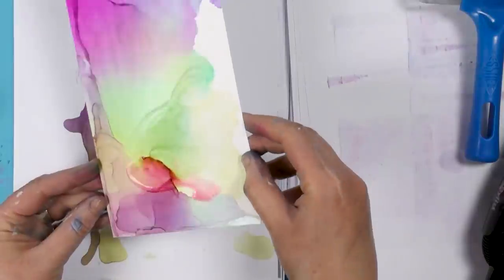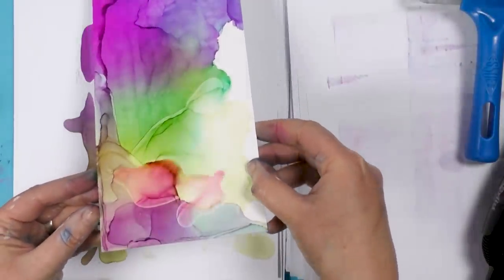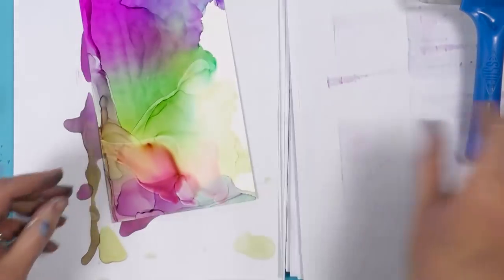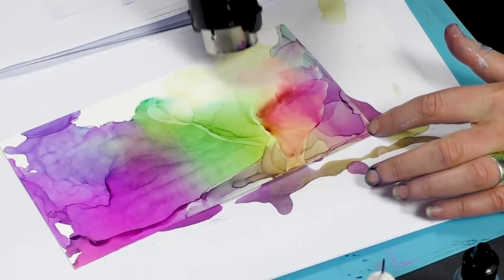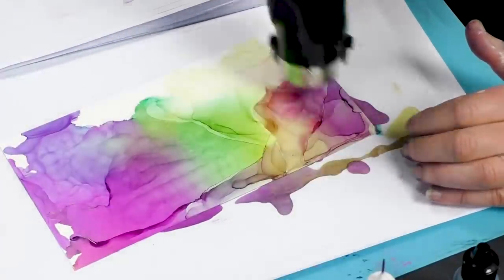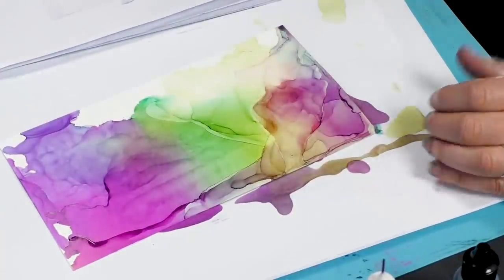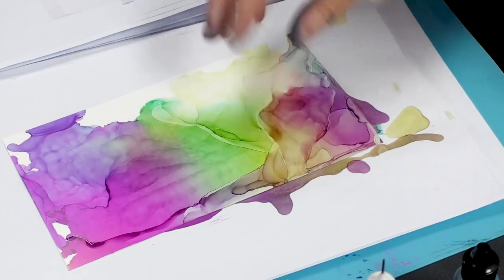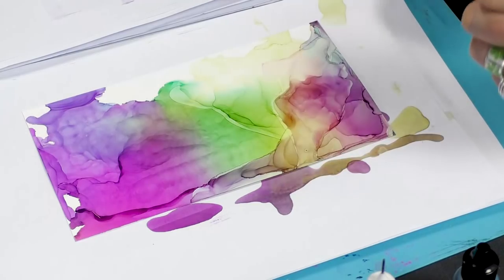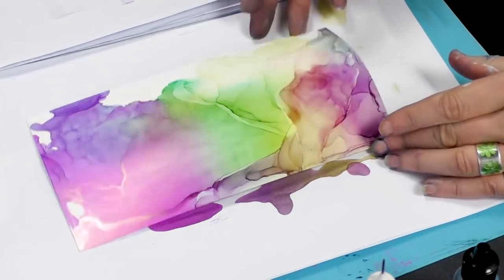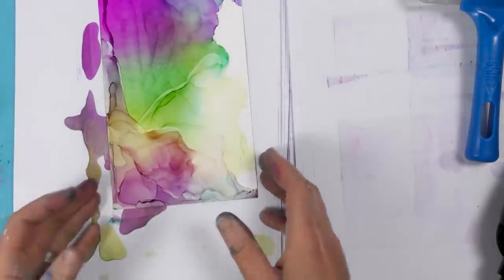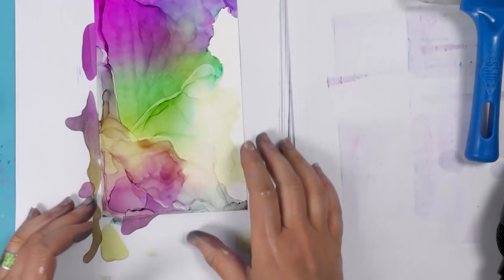And that line there is a little bit harsh, so I'm going to just take that out. And that's the beauty about the alcohol inks. You know, if you don't like an area, just put some blending solution on, move it around. You can change the colors all the time. They'll just keep on moving. And if you really don't like it, just wipe it clean and start again.